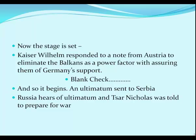Austria sent an ultimatum to Serbia. Russia heard the ultimatum and Czar Nicholas was given the worst advice any leader could receive — his advisor said they needed to prepare for war. The Czar was reluctant, fearing it would look like they were starting something, but his generals convinced him it would look like maneuvers. The Czar gave the okay to prepare for war.